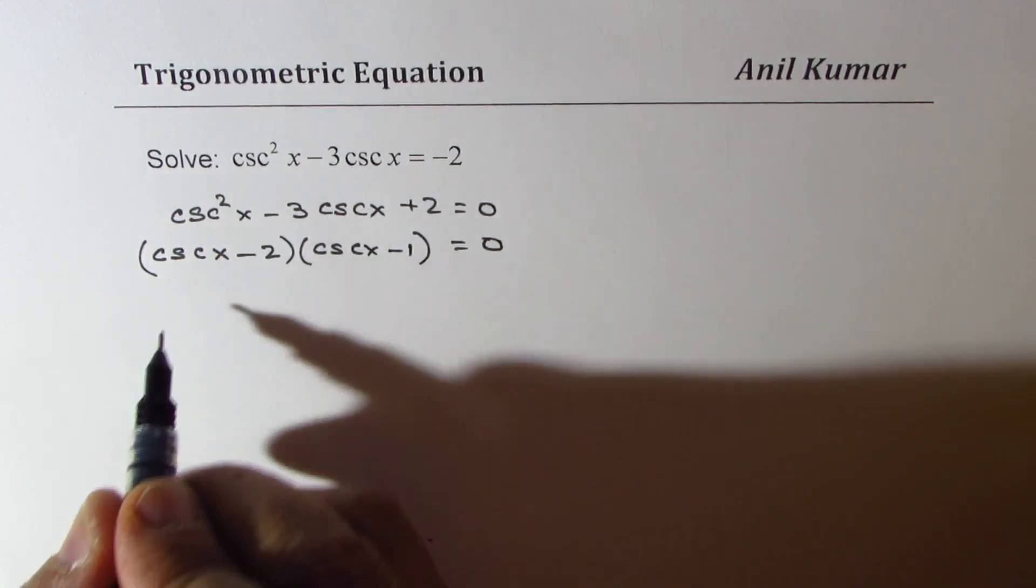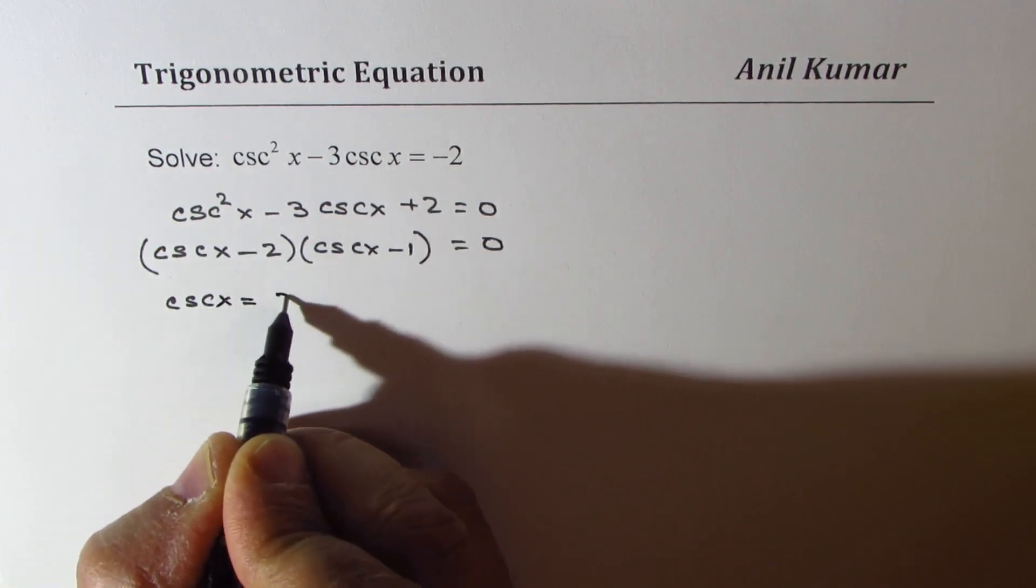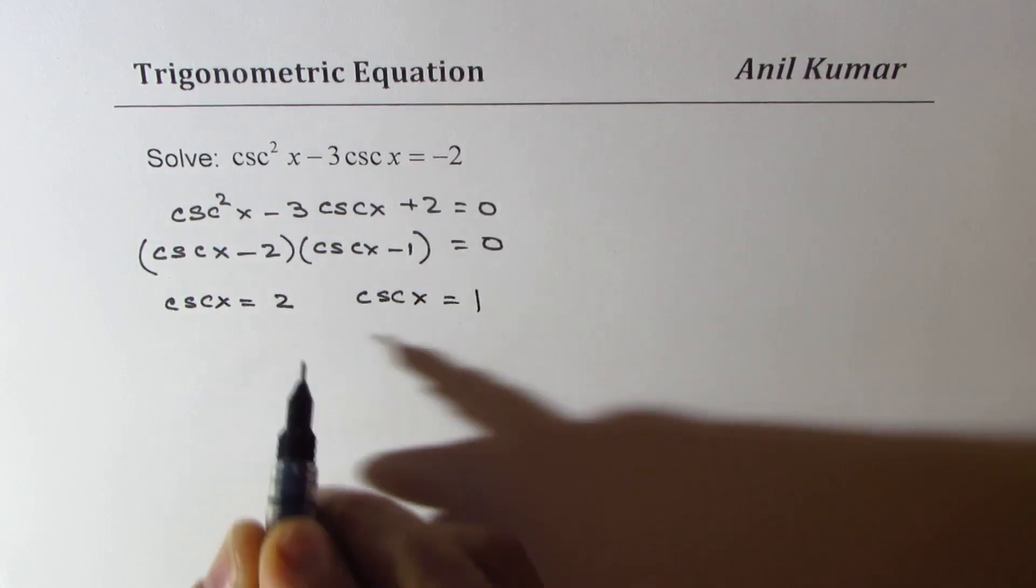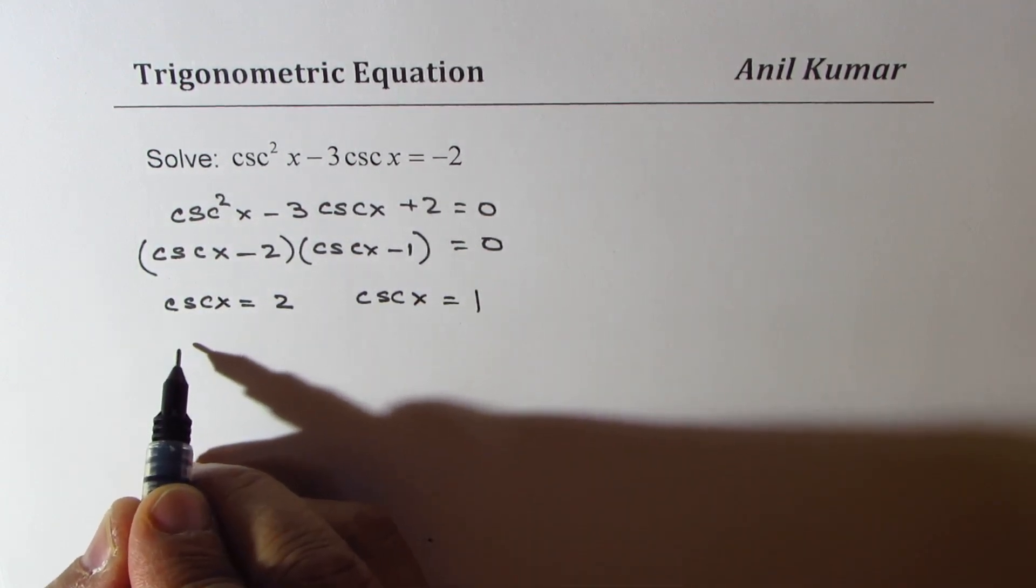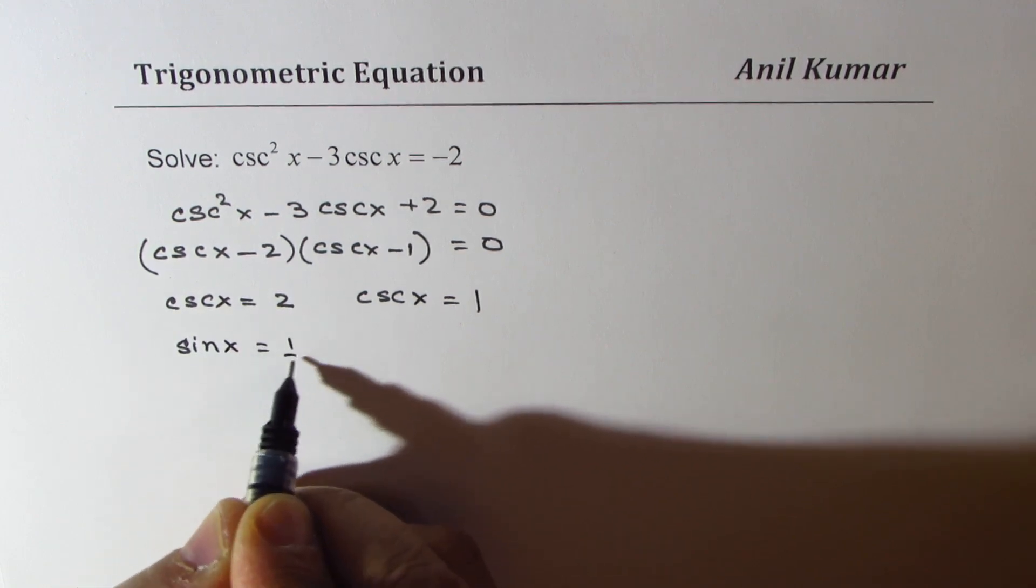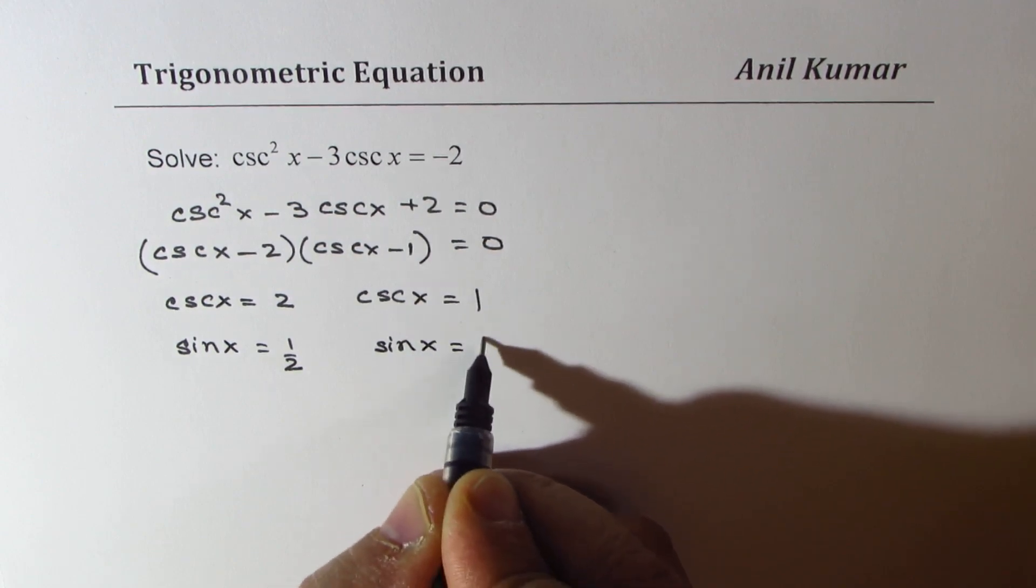So that gives you two possible solutions. One is cosecant x equals 2. The other one is cosecant x equals 1. Now cosecant is 1 over sine, so we could write this as sine x equals half or sine x equals 1.